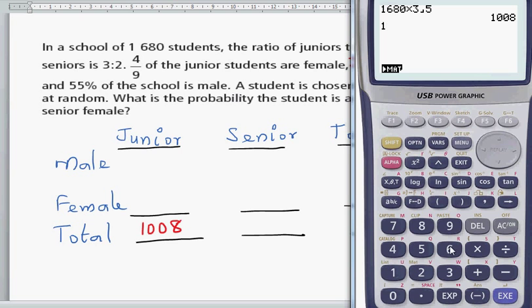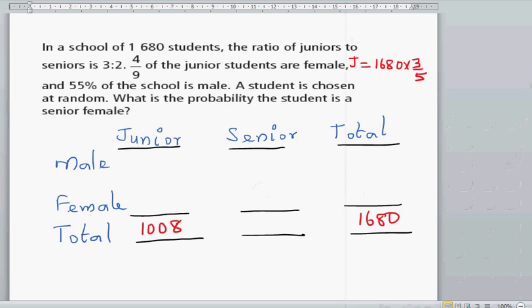And for seniors, it will be 1,680 times 2/5, which is 40%, which is 672. So write 672 here. You should always check whether this number plus this number adds to 1,680.